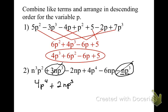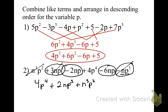Next, going to p to the 2nd — there is only one, so I'm going to write plus n to the 3rd p to the 2nd. It's positive. Then I've got negative 2np and negative 6np, which makes negative 8np. And I've already done this one, and we are done.